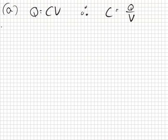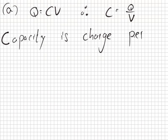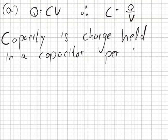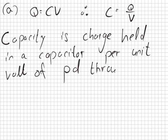So if we just write this as a statement, capacity is charge held in a capacitor per unit volt of potential difference through the capacitor.